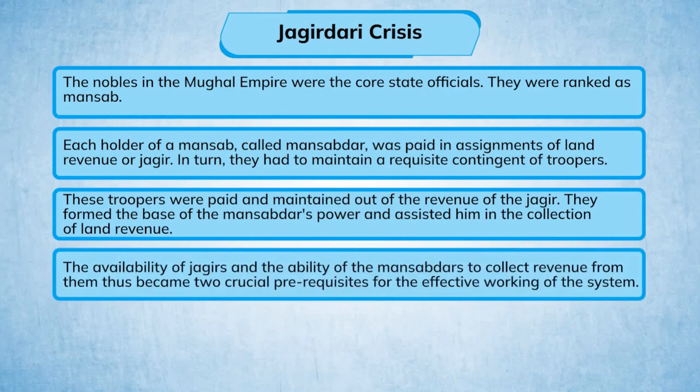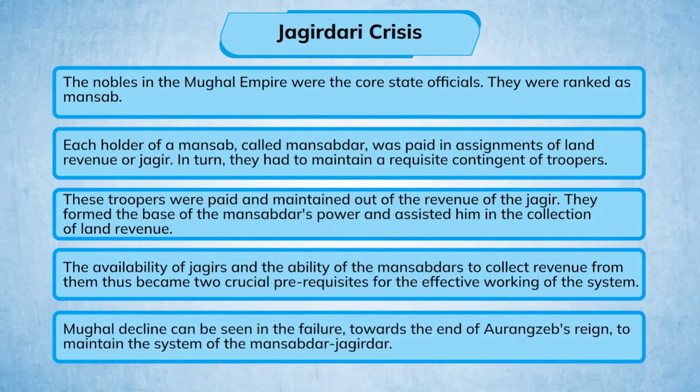The availability of Jagirs and the ability of the Mansabdars to collect revenue from them thus became two crucial prerequisites for the effective working of the system. The Mughal decline can be seen in the failure, towards the end of Aurangzeb's reign, to maintain the system of the Mansabdar-Jagirdar.